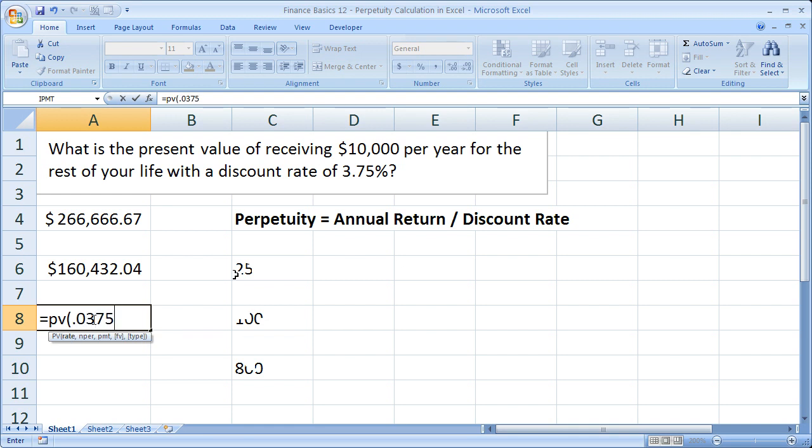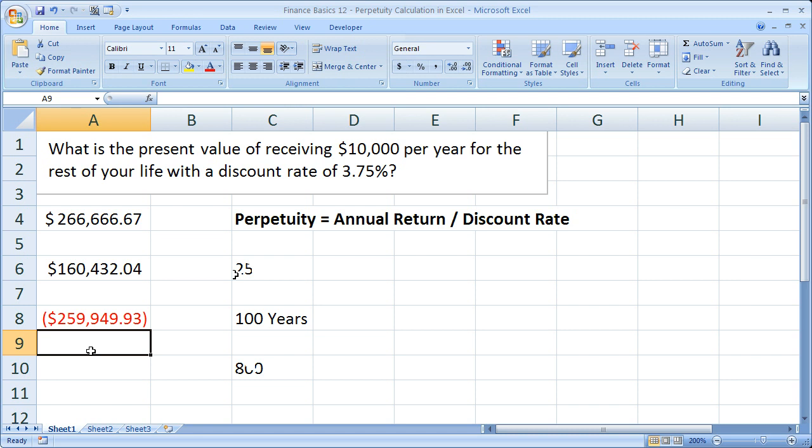And if you don't know how to use the present value function, check out some of the other finance basics tutorials. And I go through those quite thoroughly. So number of periods here, 100. Payment, 10,000. All right, let's check this one out. We're getting a lot closer to 266,000 now.